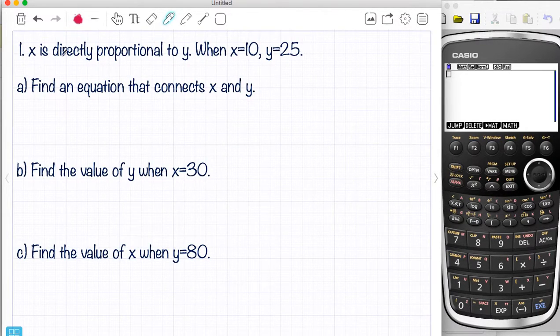So I'm going to look at this. X is directly proportional to Y. So this is a very typical question from exams and we're told here directly proportional. So we've got that magic word directly proportional and we're given some information. When X equals 10, Y equals 25. Find an equation that connects X and Y.